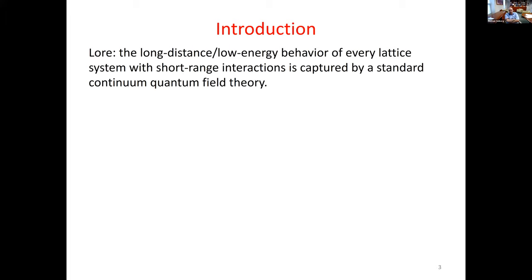There is a lore that all of us were educated by — or maybe I should say brainwashed by — that whatever happens at short distances, at long distances it's captured by local quantum field theory. Specifically, if we start from some lattice system with short-range interactions, spins interacting in some way, whether fermions or bosons, at long distances the lattice is not important, all the UV information is washed out, and we have some continuum theory at long distances. There are some signs from string theory and little string theory suggesting things might be more subtle.